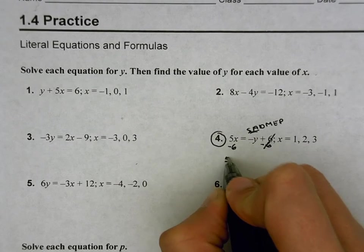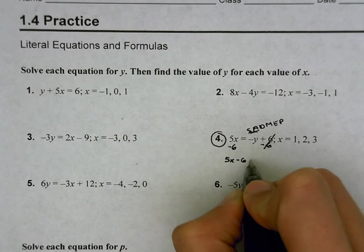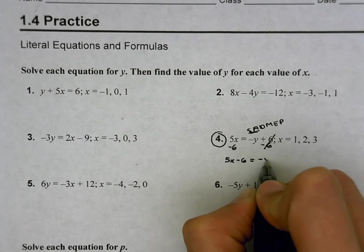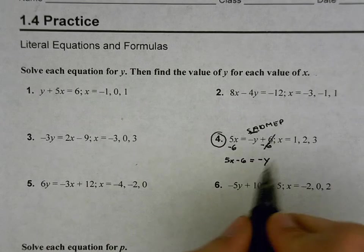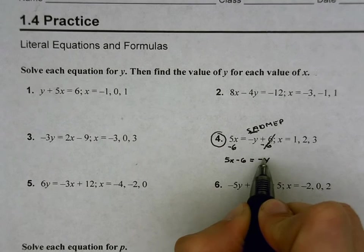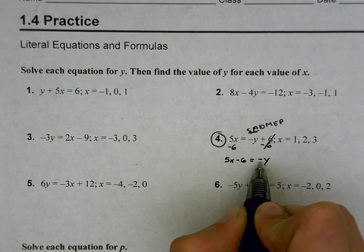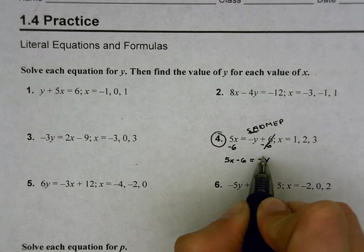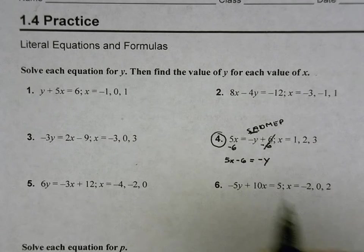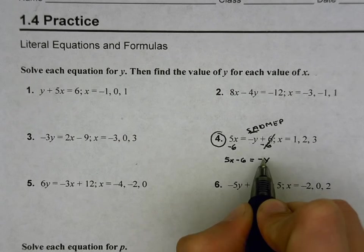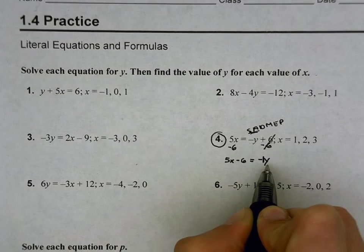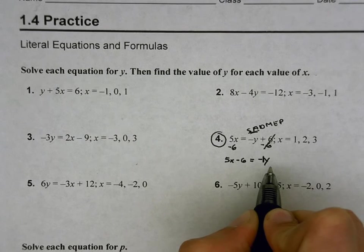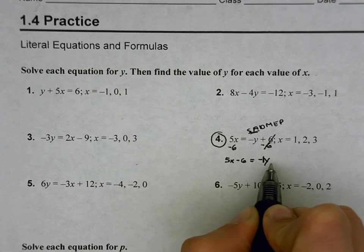So now we're at 5x minus 6 equals and negative y is what's left over. Now at this point, the only thing still stuck to that y is that negative. And this actually is a negative 1. There's an invisible 1 that we don't generally write in front of the y, but it is located there. It's technically negative 1. And when you have a number sitting right next to a letter like that, that means that they're being multiplied. This is negative 1 times y.